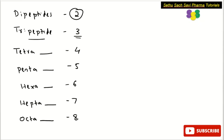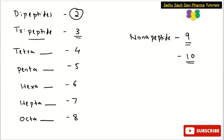If there are nine amino acids linked by a peptide bond, such peptides are called nonapeptides — the number of amino acids is nine. Similarly, if ten amino acids are linked by a peptide bond, they are called decapeptides. Remember the number of amino acids present in each of these peptides.